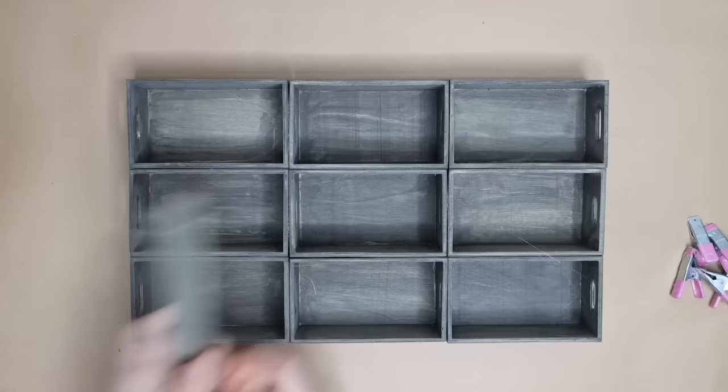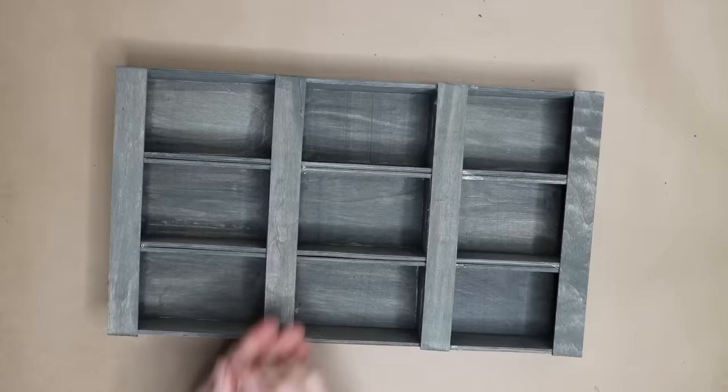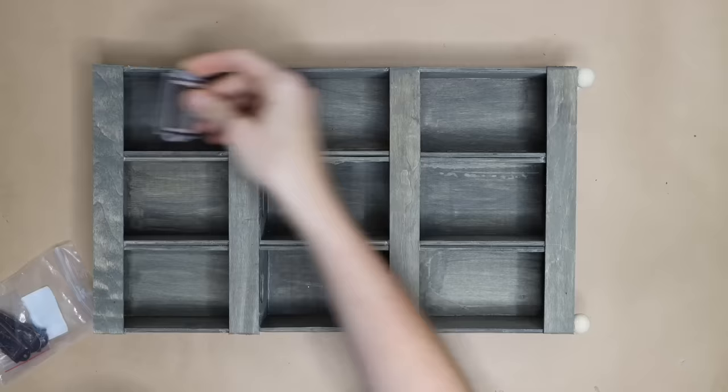Cut the stir sticks to the right size and hot glue them to the front bottom of each row of the crates. Add four wood beads with hot glue to create a base. Then use a screwdriver to attach the drawer label holders to the stir sticks.